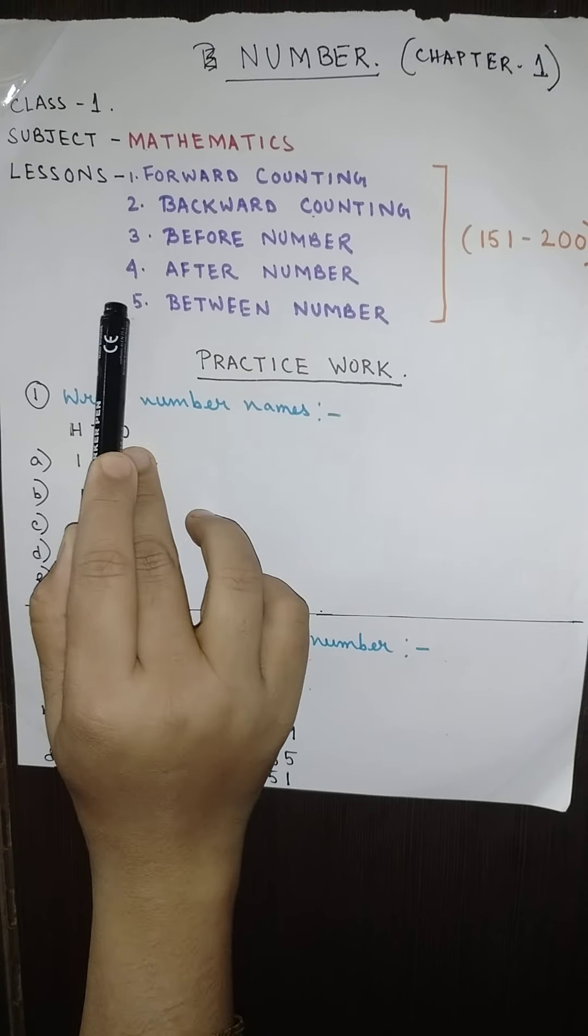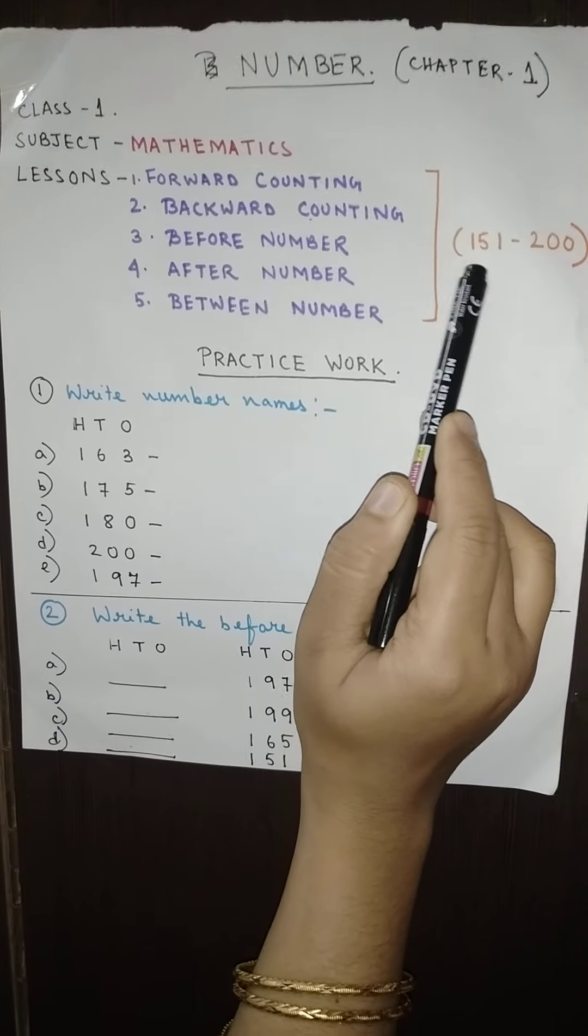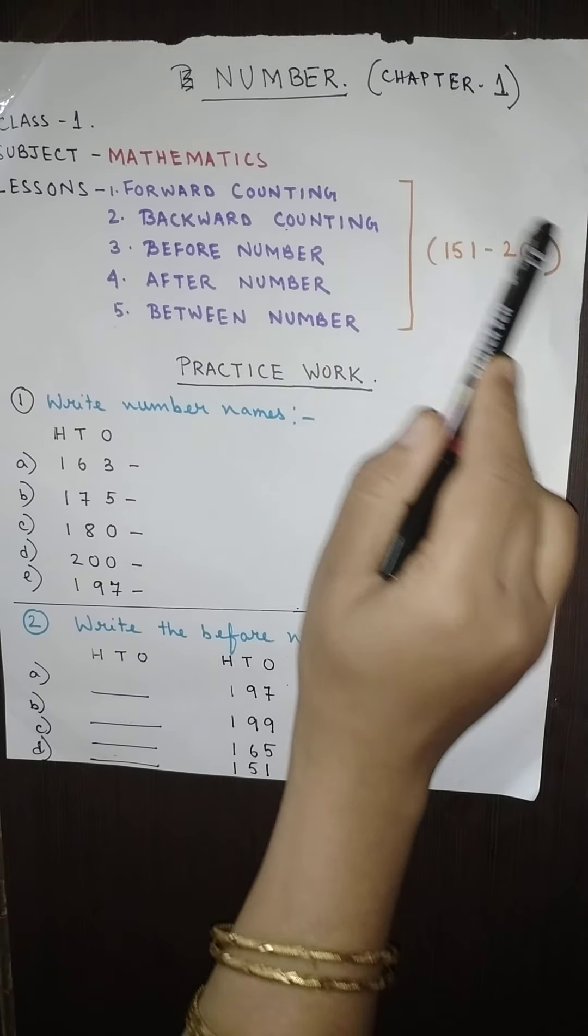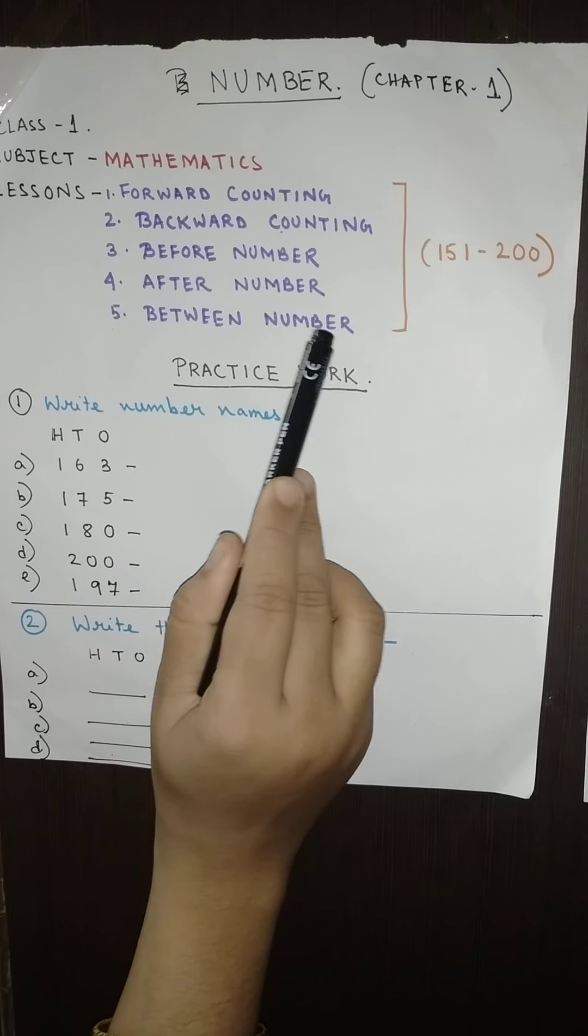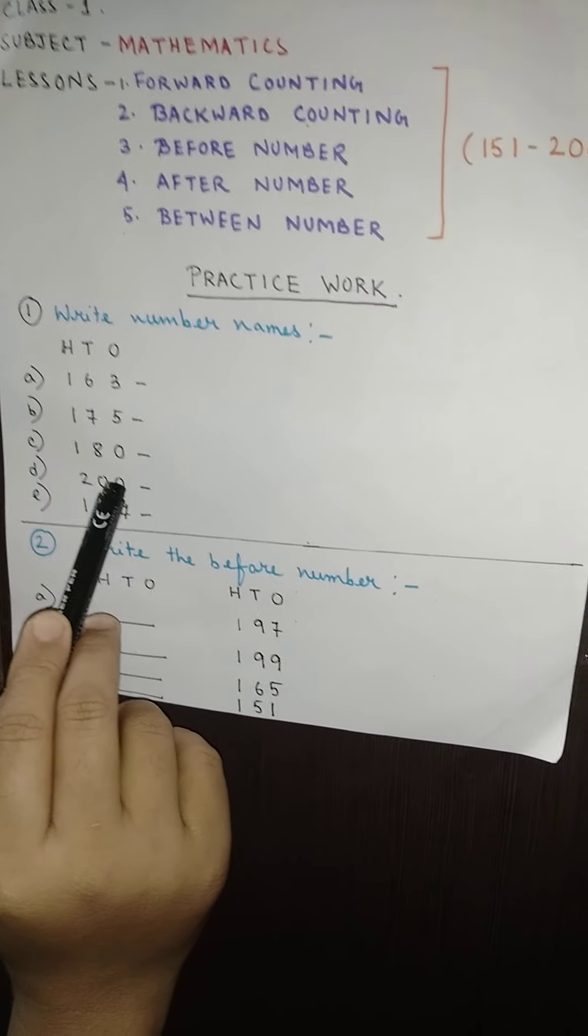So under this chapter we have already learned how to do the forward counting of numbers ranging from 151 till 200, and we have already done the backward counting of same numbers, and before number, after number, and between number. So now you can see that I have prepared one practice worksheet for you which you will be doing in your Math CW copy.